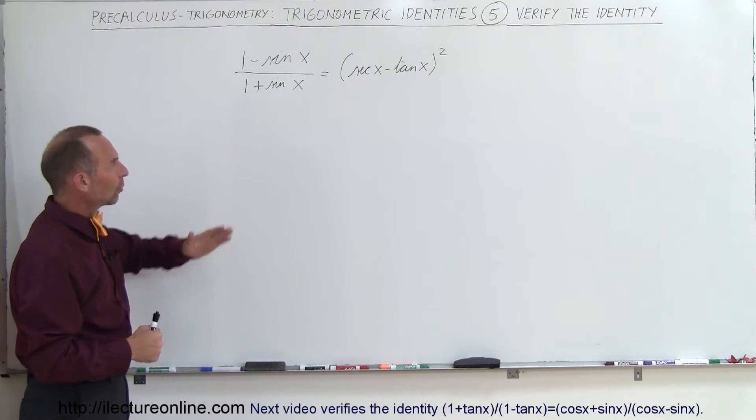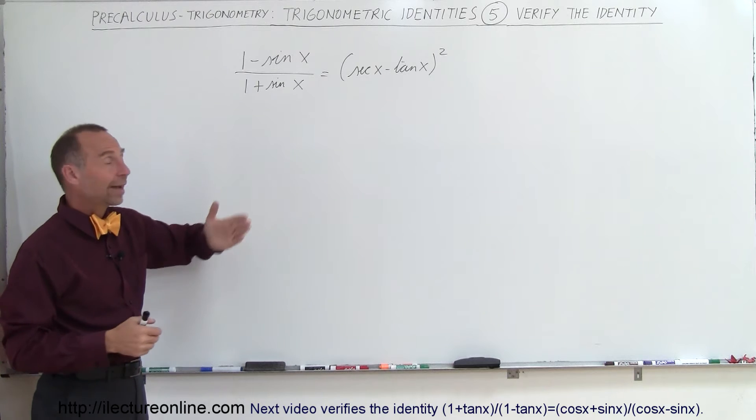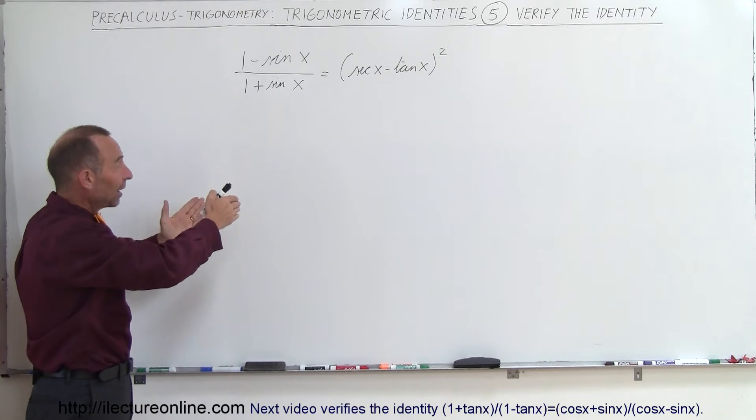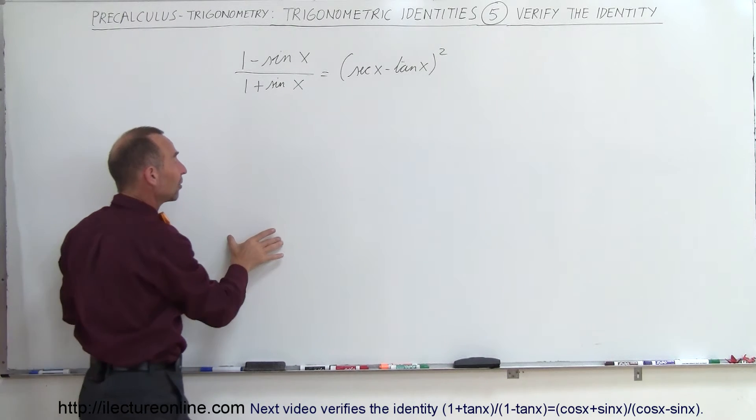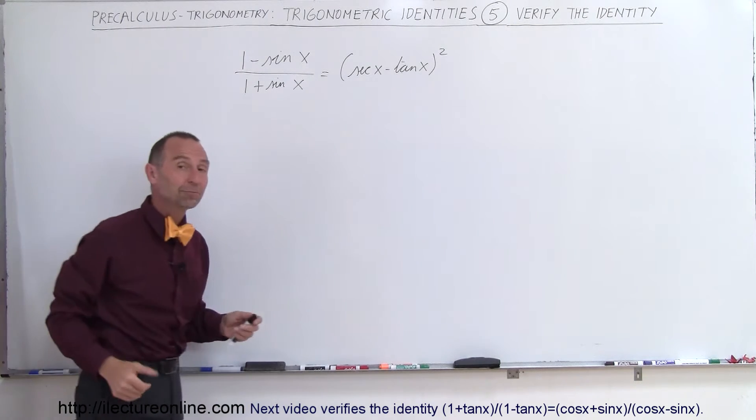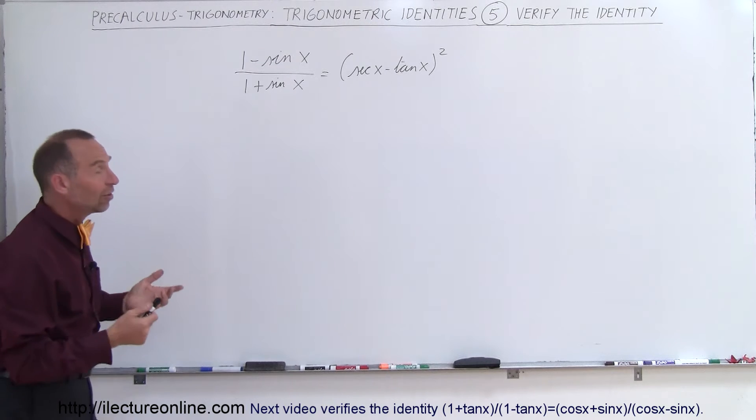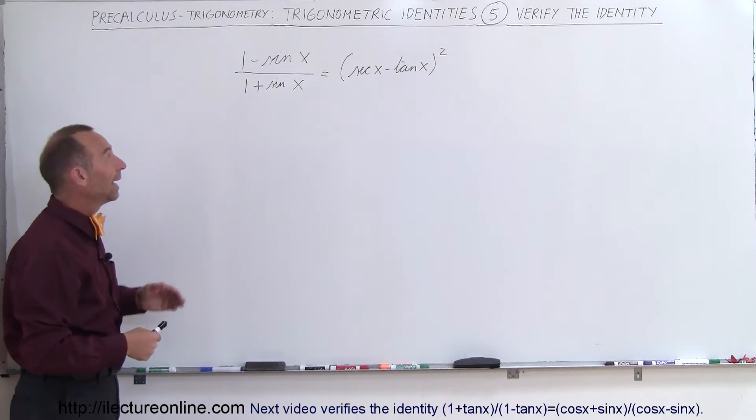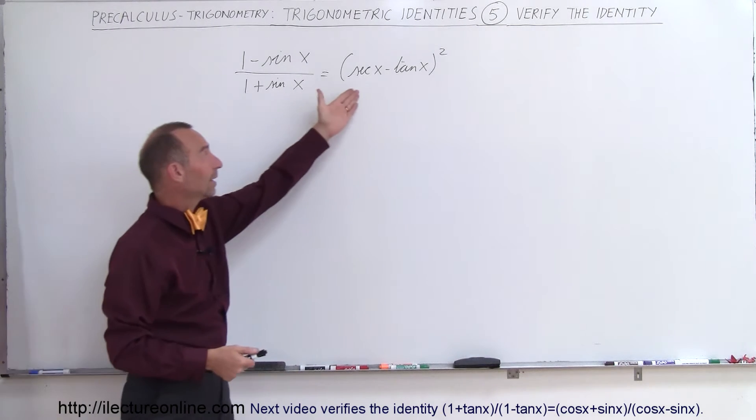And so what we want to do is either start with the left side and the right, or the right side, manipulate the left side, change it completely until the left side looks like the right side, or start with the right side, manipulate this until the right side looks like the left side. So that's what we're trying to do. So in this case, let's start with the left side and manipulate it until it looks like that side.